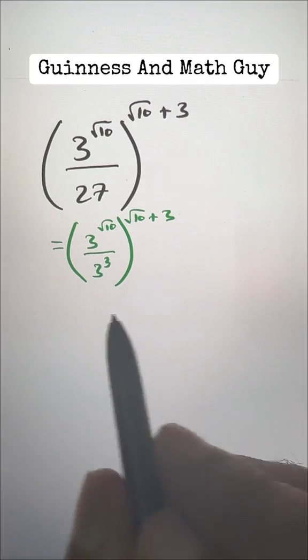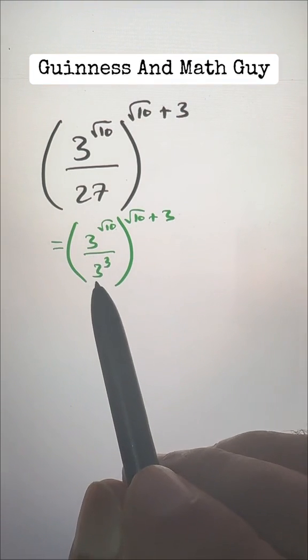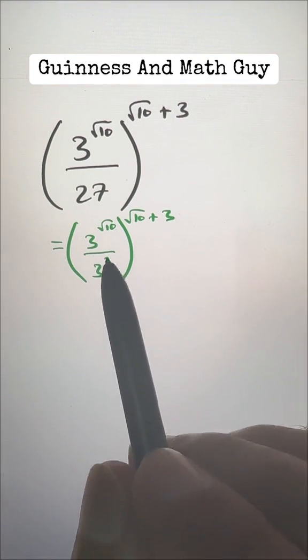Now using the power rule of division, if the base is same—here we have 3 and here we have 3—the powers are subtracted.